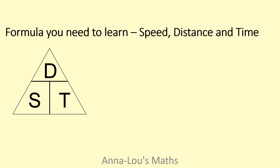So if I cover up distance, I'm left with speed and time next to each other, so distance is speed multiplied by time. If I cover up speed, speed is distance divided by time.